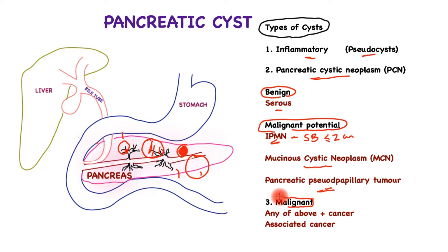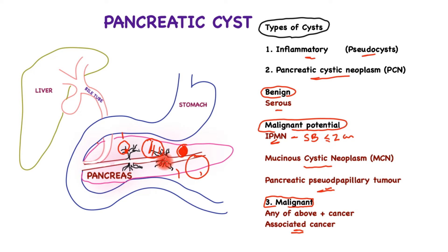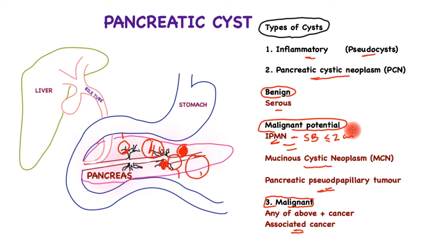The third type are cancerous cysts. Any of these three types, if they turn cancerous, will have features of both a cyst and a solid tumor. Pancreatic ductal adenocarcinoma may cause blockage of a cyst and have an associated cyst next to a more solid component. As mentioned, the great majority of cysts discovered incidentally are benign in nature, though some, such as side branch IPMN, may require further follow-up and surveillance.